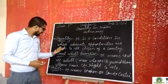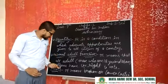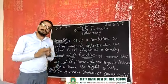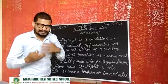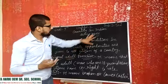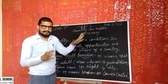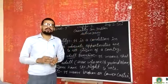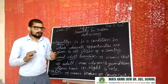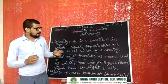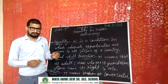So in this first video we have talked about the main points: equality, universal adult franchise, and Dalit. In the next video we will consider two stories of two people on this topic.